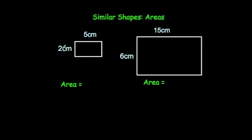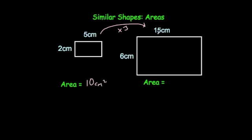This time we've got 2 and 5 centimetres for the rectangle on the left, but the one on the right is 6 and 15. So it's an enlargement by a scale factor of 3 — we have multiplied the sides by 3 to get the larger rectangle. 2 times 5 again is 10 centimetres squared, and 6 times 15 is 90 centimetres squared. So the areas are 9 times bigger. When we multiply the sides by 3, the areas become 9 times bigger.